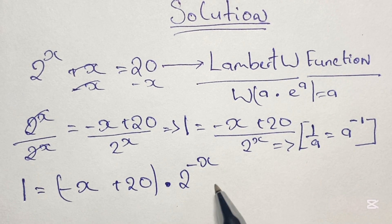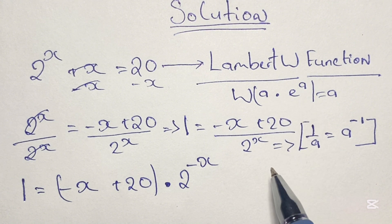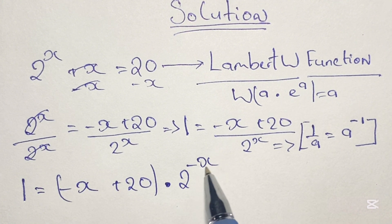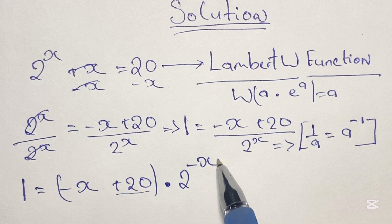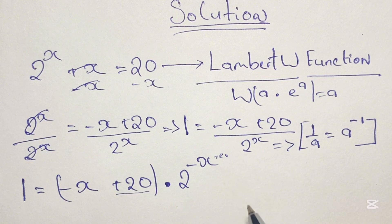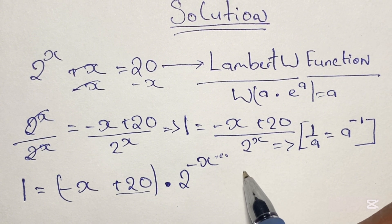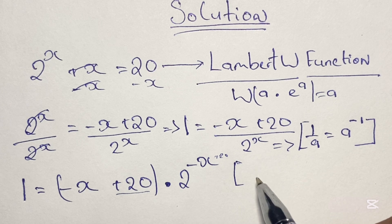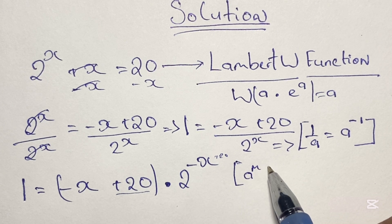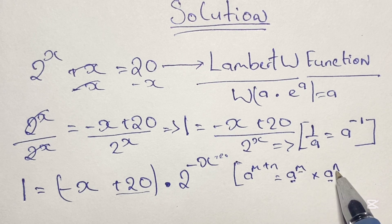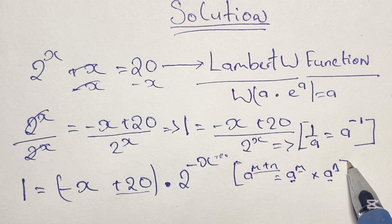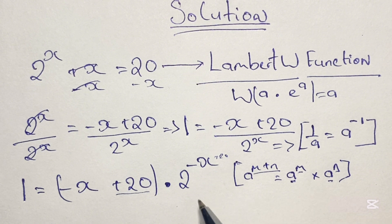As we are writing our equation in the form of a times e to the power of a, we see a negative x here and a negative x in the power, but we also have a plus 20. So we need a plus 20 in the power as well. We achieve this by using the law of indices: a to the power of m plus n equals a to the power of m times a to the power of n, where we see the same base and just add the powers.